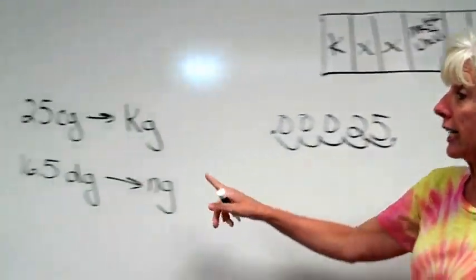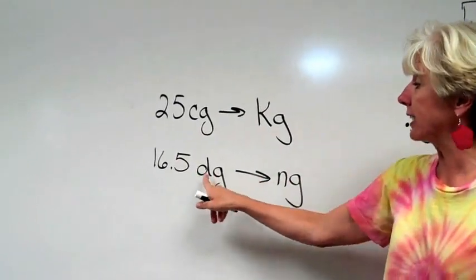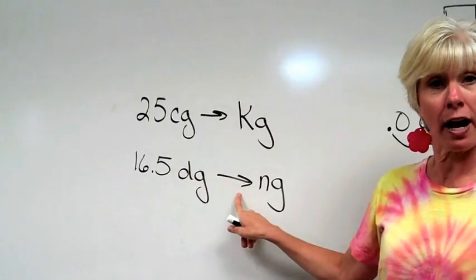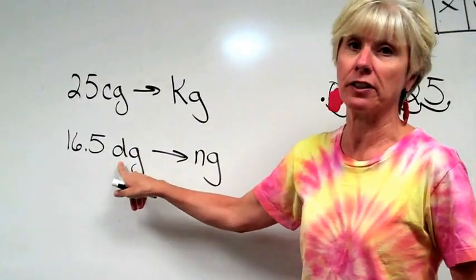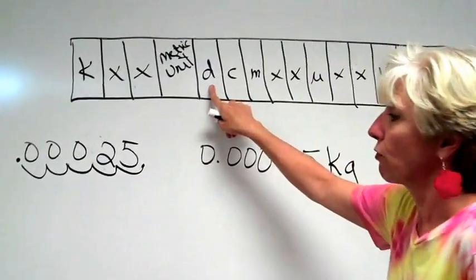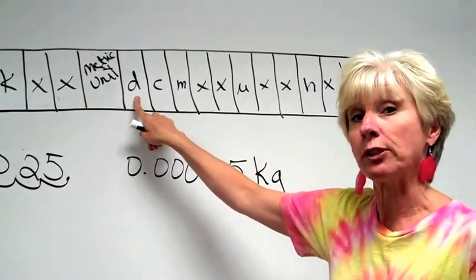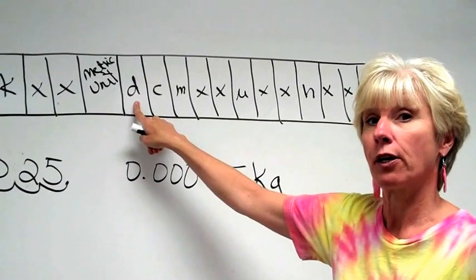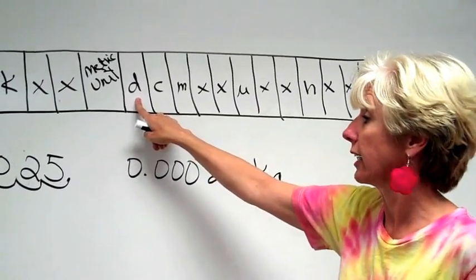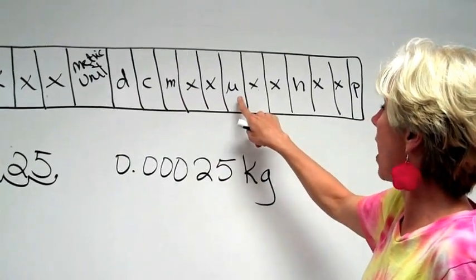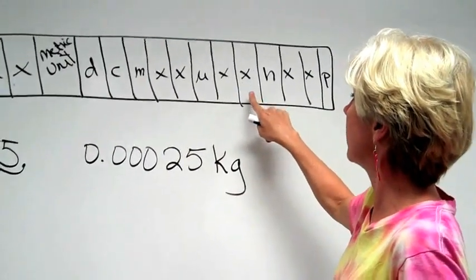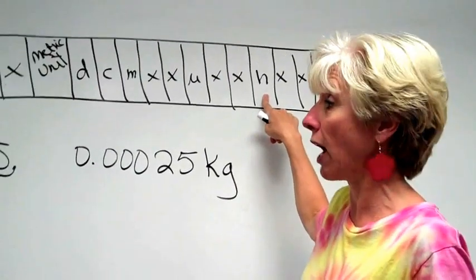What about if we want to change 16.5 decigrams to nanograms? We're going to put our finger on the d for desi. Right here. Now in which direction do we move our finger? We're going to move it to the right. We're going to move it one, two, three, four, five, six, seven, eight places to the right.